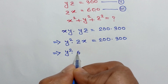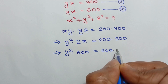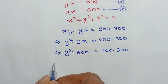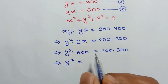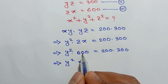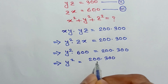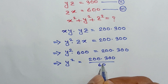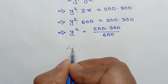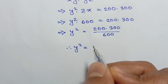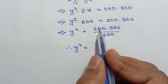So 600 times y² is equal to 200 times 300. Dividing both sides by 600, y² is equal to 200 times 300 divided by 600. That gives us 600 divided by 300 equals 2, and 200 divided by 2 equals 100. So the value of y² is equal to 100.